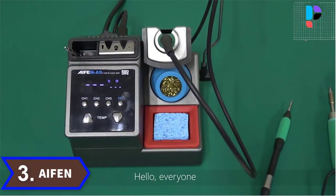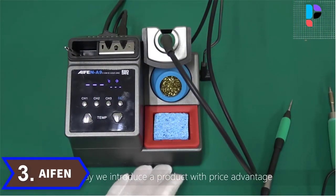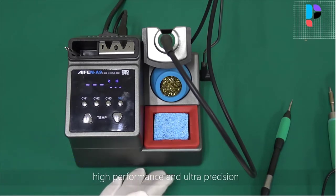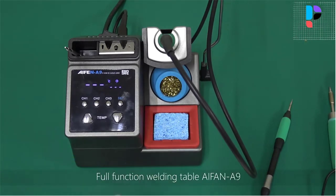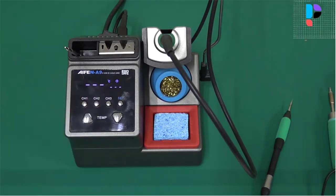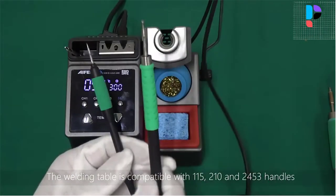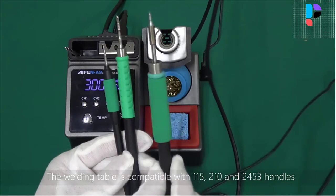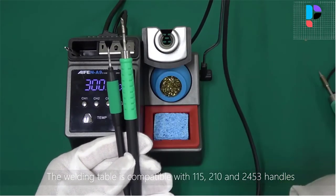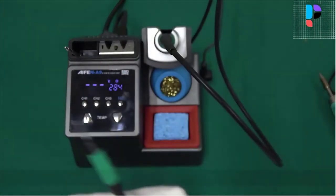Number 3. Brand name: Iphone. Model number: A9. Iphone A9 soldering station, using the program chip to control the temperature, heating up quickly and accurately, 2 seconds to melt the tin.